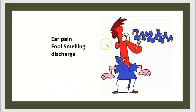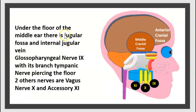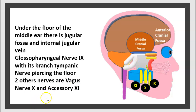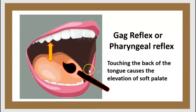There is ear pain and foul-smelling discharge. Under the floor of the middle ear, there is a jugular fossa and internal jugular vein, with three main nerves: the glossopharyngeal nerve, the vagus nerve, and the accessory nerve. The glossopharyngeal nerve gives the tympanic nerve to the middle ear. In malignant otitis, this nerve could be affected. To evaluate the glossopharyngeal and vagus nerves, we do the gag reflex, or pharyngeal reflex.